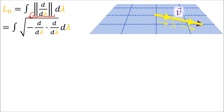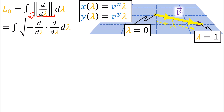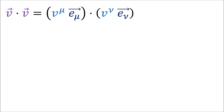The magnitude of d by d lambda is given by the square root of negative d by d lambda dotted with itself, where we use a negative sign because this is a space-like curve. Our curve goes from lambda equals zero to lambda equals one, with the x and y coordinates being proportional to the x and y components of the vector v. If we churn through the math, the result ends up just being the magnitude of the vector v with no integral required.